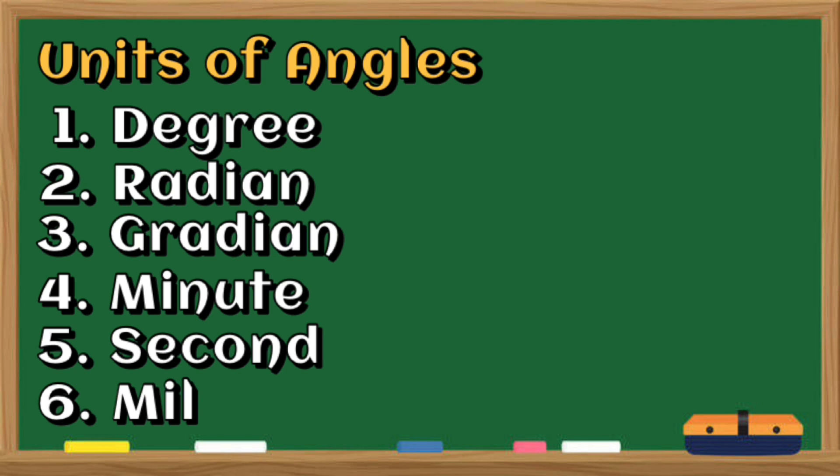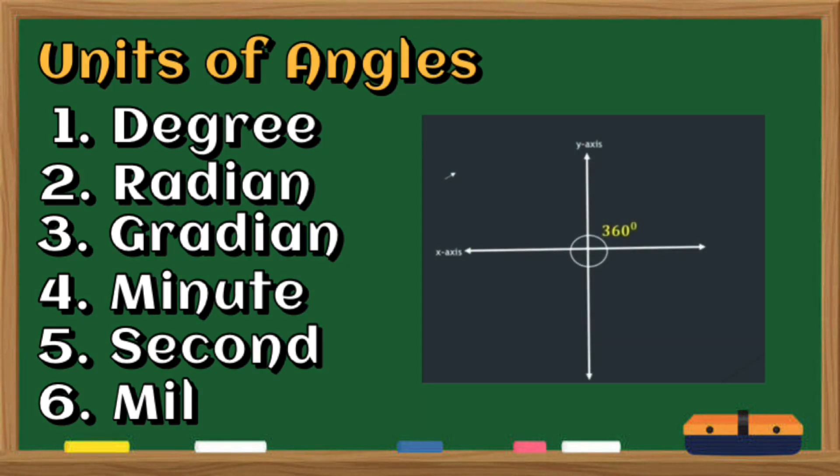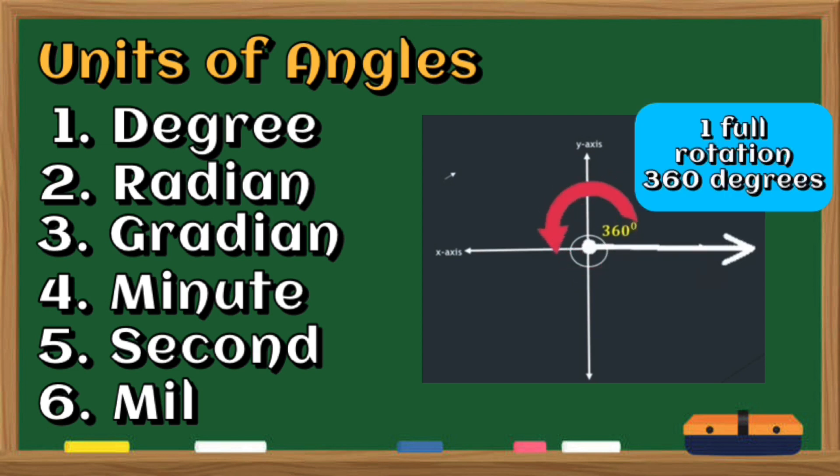Mill is equal to 1 over 6400 of a circle. Starting from the positive x-axis as the initial side and ending at the same position makes 1 full rotation, which is equivalent to 360 degrees. Meaning, a 360-degree angle is an angle where the initial side is also the terminal side.